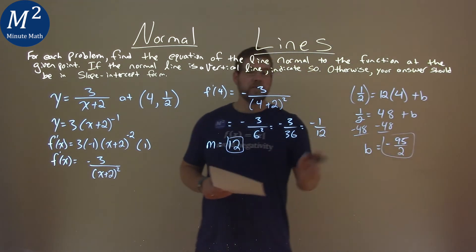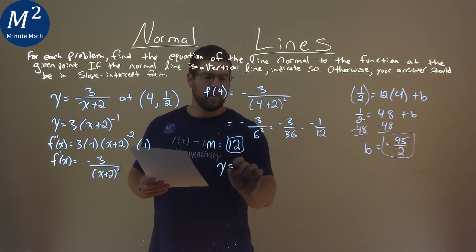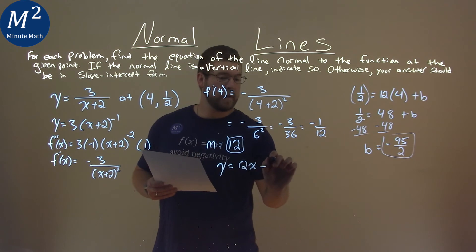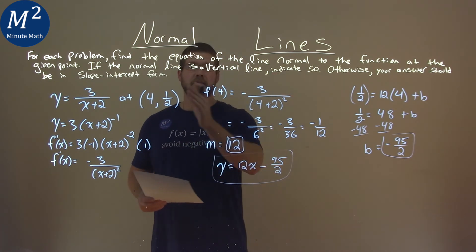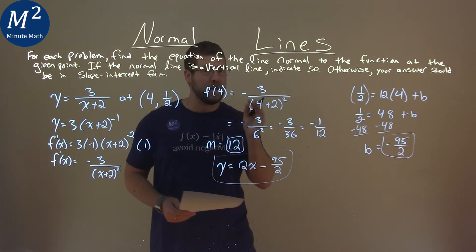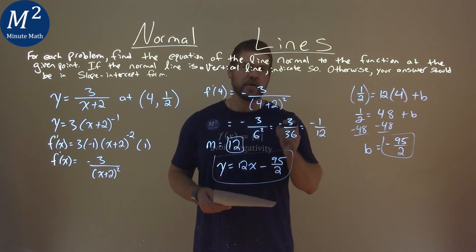So, we have the b value, we have the m value. We can find the equation of the line. y equals 12x minus 95 over 2. And so, there we have the equation of the line normal to the function at 4 comma 1 half, and that equation is y equals 12x minus 95 over 2.